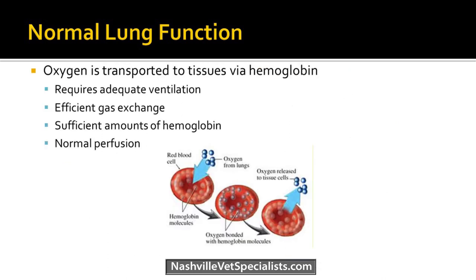Once oxygen is in the blood, it's transported to tissues via hemoglobin. That requires adequate ventilation, adequate gas exchange, enough hemoglobin — which is important in our anemic pets, since if they don't have enough hemoglobin they can't get oxygen to their tissues — and normal perfusion. If you have low blood pressure, you're not going to get enough oxygen to your tissues.